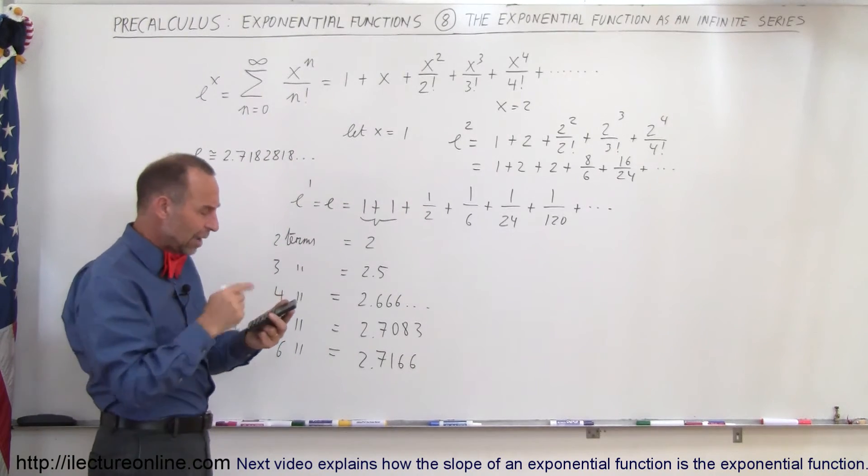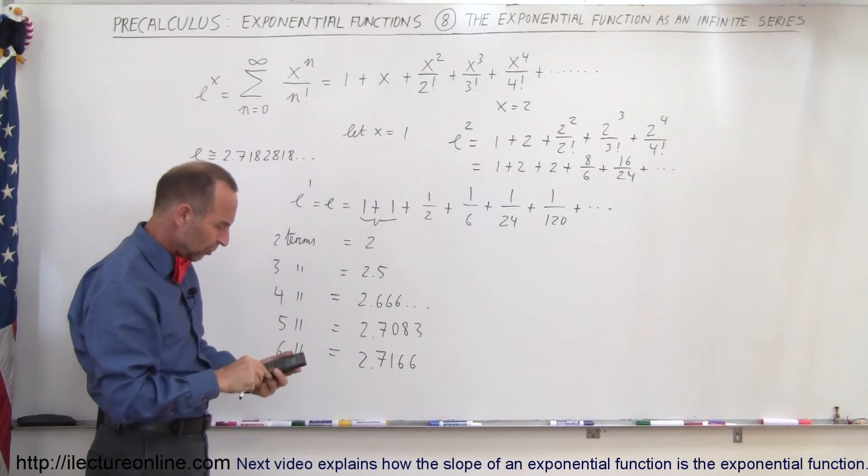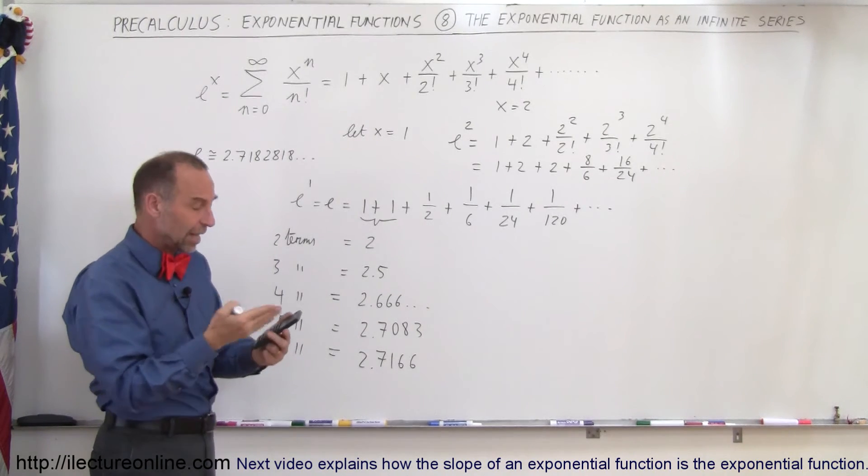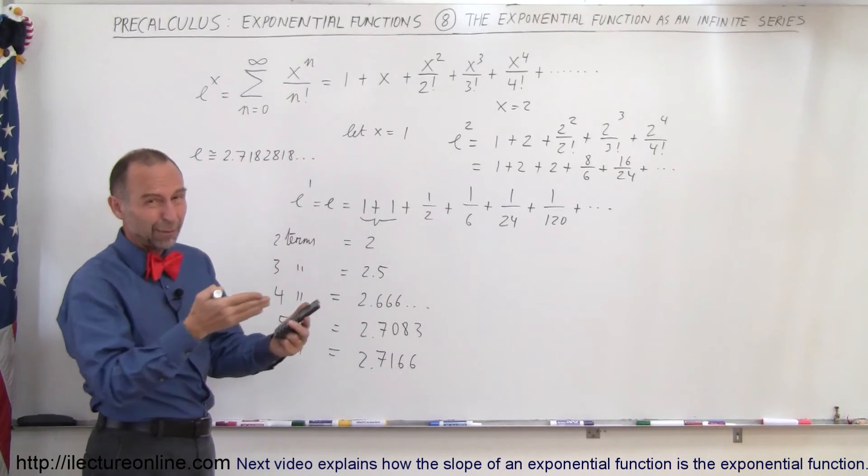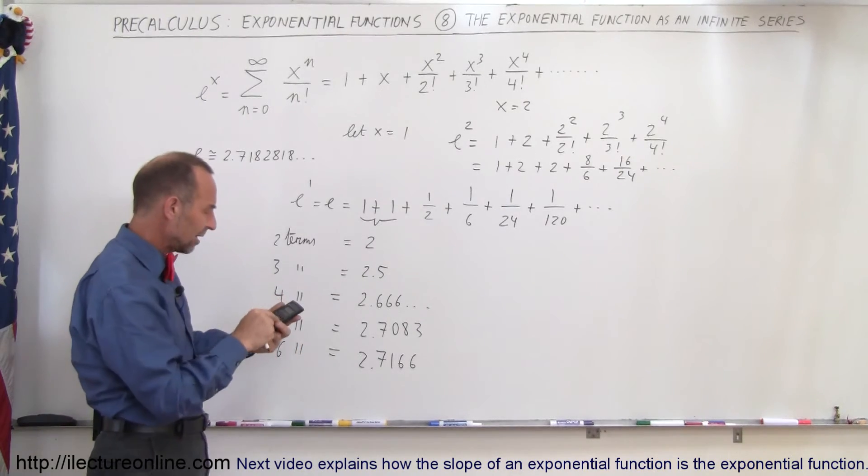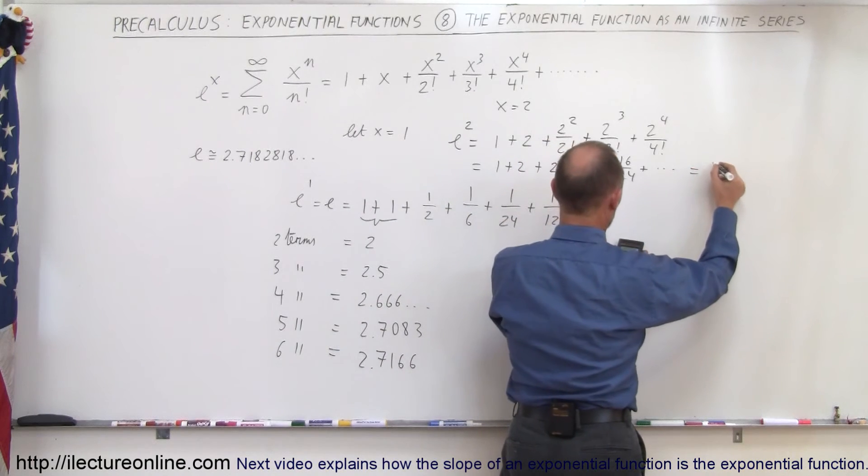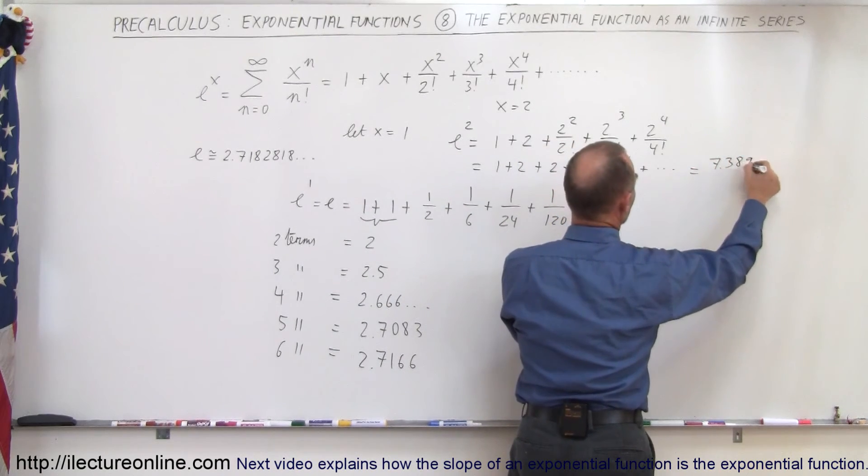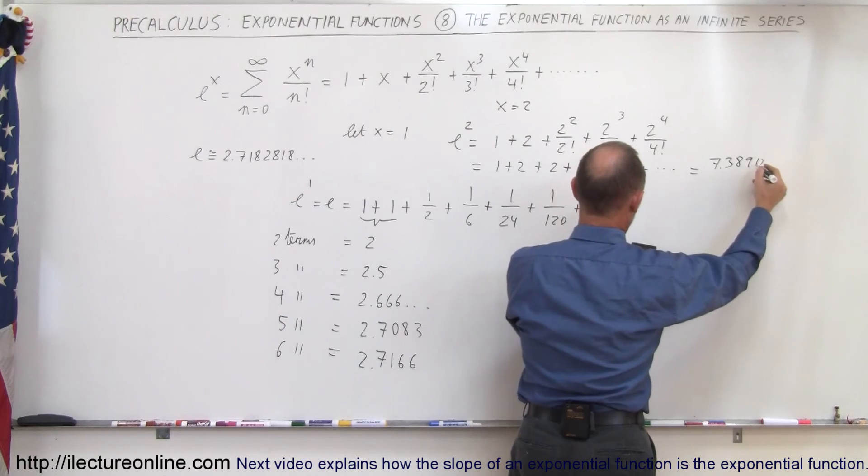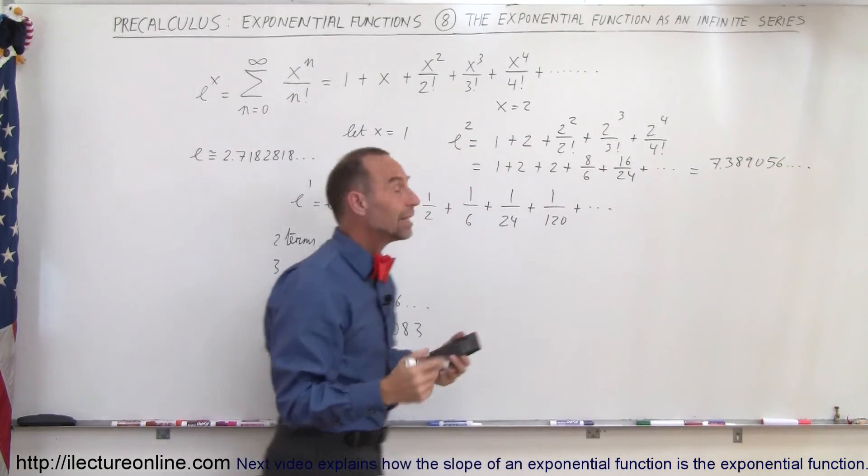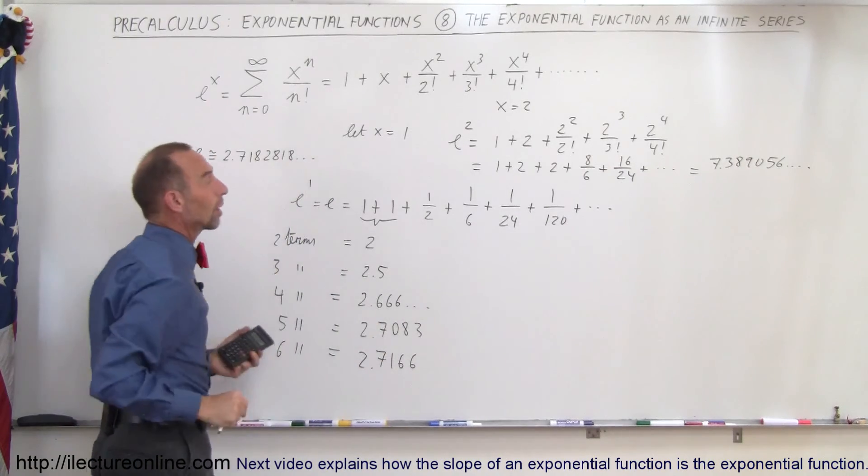Usually on your calculator, you have an e to the x button, so you can go 1, press e to the x button, which gives you the natural number e to probably 8 or 9 or 10 decimal places, and now if you square that number, then eventually, this should add up to 7.389056 and so forth, so you can see that would be equal to the natural number squared.